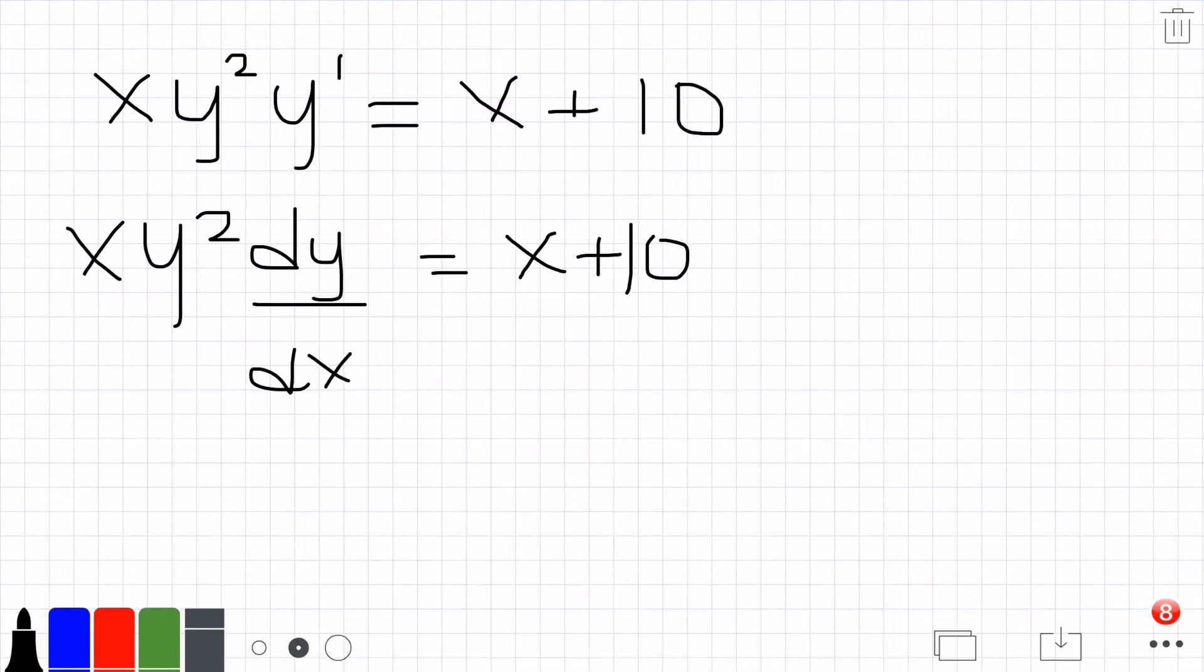Now I want to get the y's on one side with the dy and all the x's on one side with the dx. If we multiply the dx to the other side and divide x on this side, we're left with y² dy = (x + 10)/x dx.